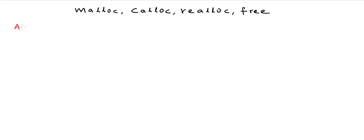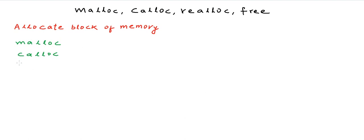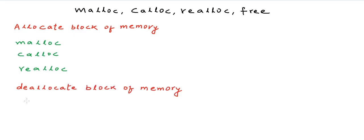We will be talking about three functions that allocate a block of memory on the heap. These functions are malloc, calloc, and realloc. We will also be talking about one function that deallocates a block of memory on the heap, and this function is free.